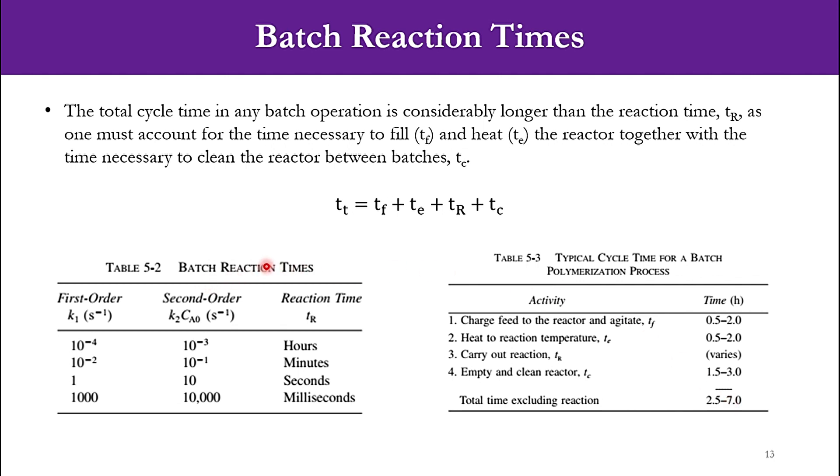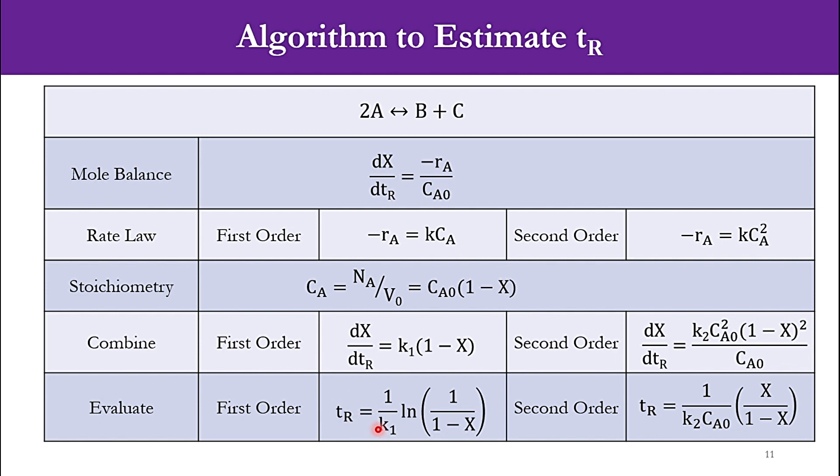You can see the batch reaction times for first order and second order. For first order it is 10⁻⁴ and 10⁻³, which is in hours, then minutes, seconds, and it could be milliseconds. As the k₁ or k₂C₀ values are increasing, the reaction time is decreasing. If you go back to the previous relationships, you can see these are inverse of each other. With the increase in k₁, the value of reaction time decreases; with increase in k₂C₀, the reaction time decreases.